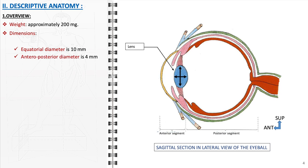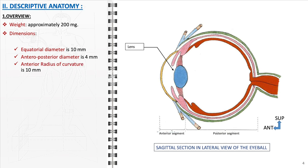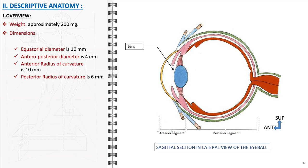The anterior-posterior diameter of the lens is 4 millimeters. This dimension measures the distance from the front (anterior) to the back (posterior) of the lens. The anterior radius of curvature is 10 millimeters. This radius describes the curvature of the lens's front surface. The posterior radius of curvature is smaller, at 6 millimeters. This measurement pertains to the curvature of the lens's back surface. These dimensions are crucial for understanding the lens's shape and its role in focusing light.